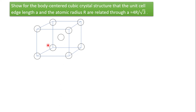To find the relation between a and r, we need to draw a line that passes through the length which has the most atoms packed along it. Note that the center atom is sitting inside the unit cell, so when we draw a line from one corner through the center to the opposite corner, we get r + r + r + r = 4r along that body diagonal.